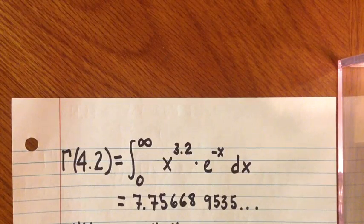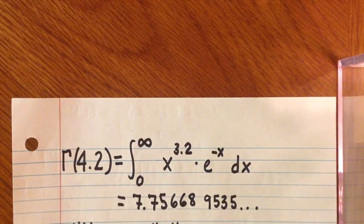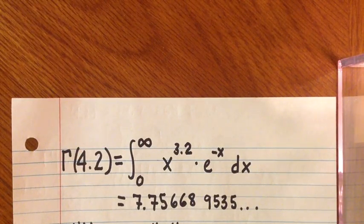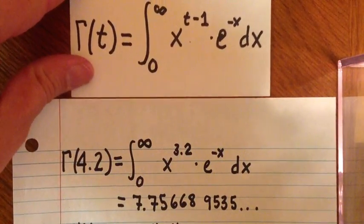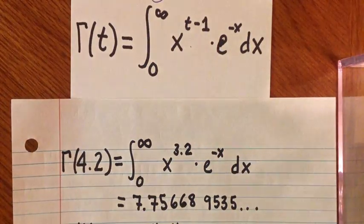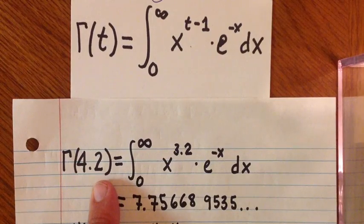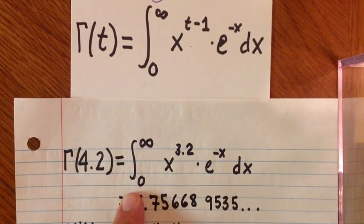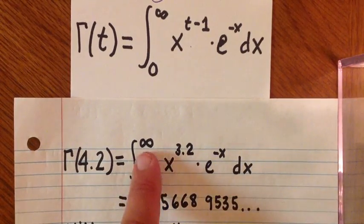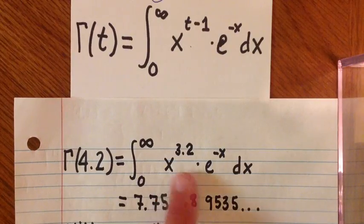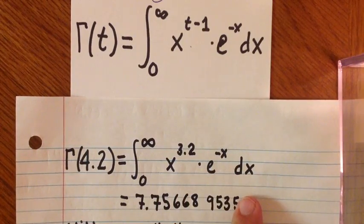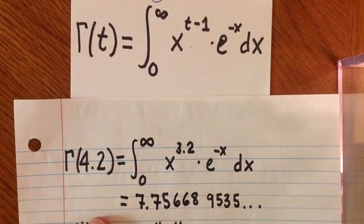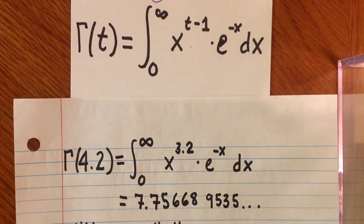For example, let's calculate the gamma of 4.2. Using the definition of the gamma function, we find that the gamma of 4.2 is equal to the integral 0 to infinity x to the 3.2 power times e to the negative x dx. T, in this case, is 4.2.